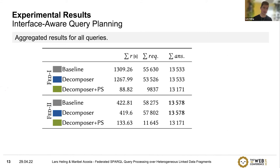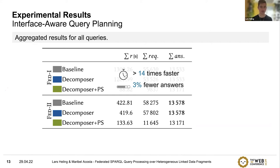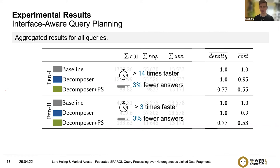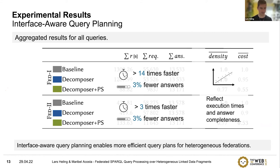Adding our decomposer and source pruning approach, we find that for the first federation we are more than 14 times faster, losing only 3% of answers. In the second federation, we are more than three times faster, again sacrificing only 3% of answers. Interestingly, while the baseline differs strongly across the two federations, after applying our methods, we are in the same ballpark regarding runtime and number of requests to the services. Our density and cost measures reflect the execution time and answer completeness overall, confirming that interface-aware query planning enables more efficient query plans for heterogeneous federations.